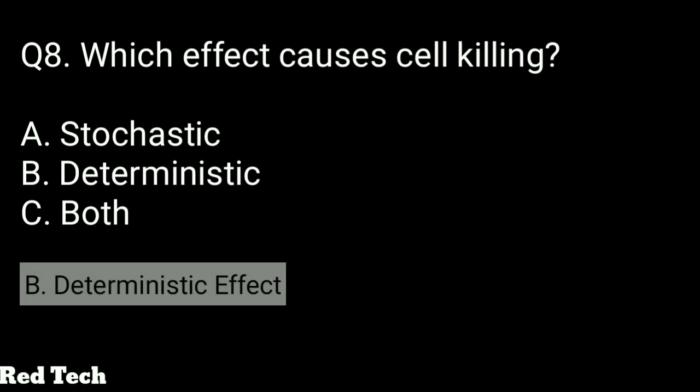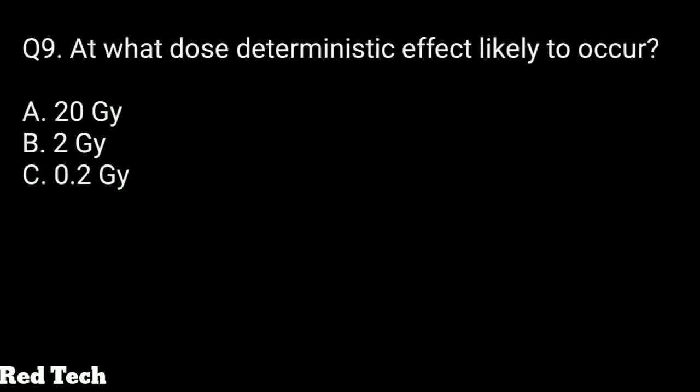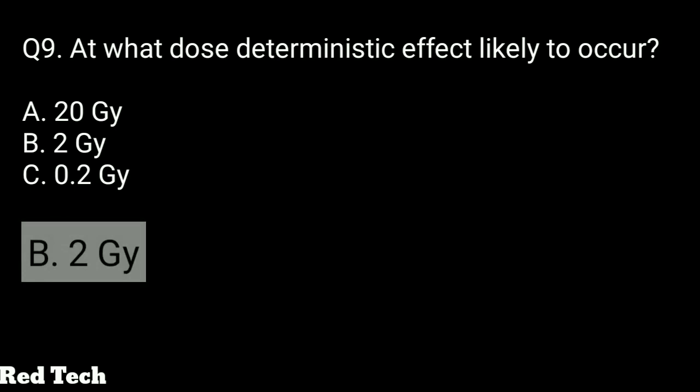A detailed video on what is stochastic and deterministic is given in the playlist — please watch it. Question number nine: at what dose is the deterministic effect likely to occur? Options: 20 gray, 2 gray, or 0.2 gray. The right answer is 2 gray — if a dose of 2 gray is received, the chances of deterministic effect increase and it can most probably occur.